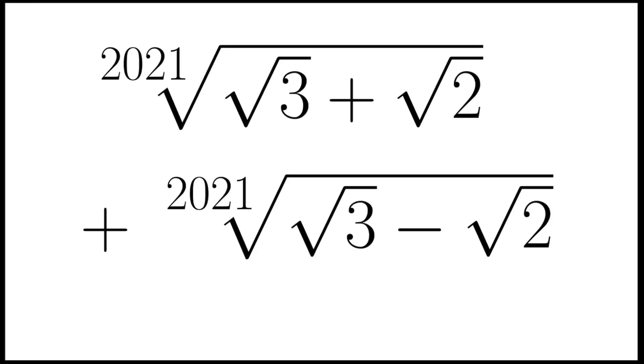Let's take a look at this number: the 2021st root of square root 3 plus square root 2, plus the 2021st root of square root 3 minus square root 2. Here comes the question, can we write this number as a fraction?